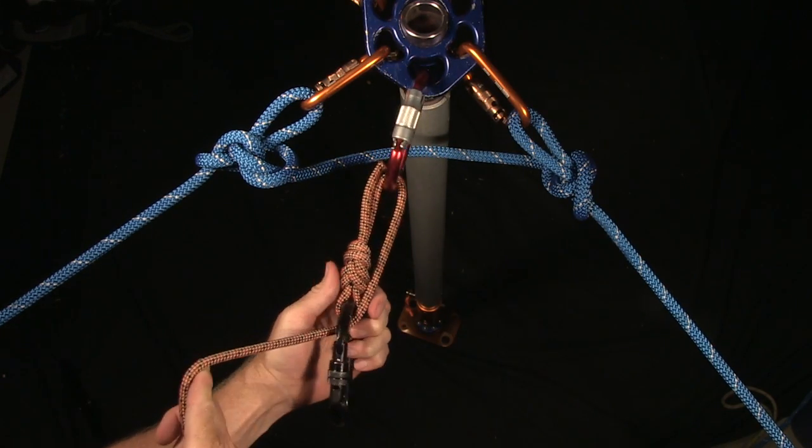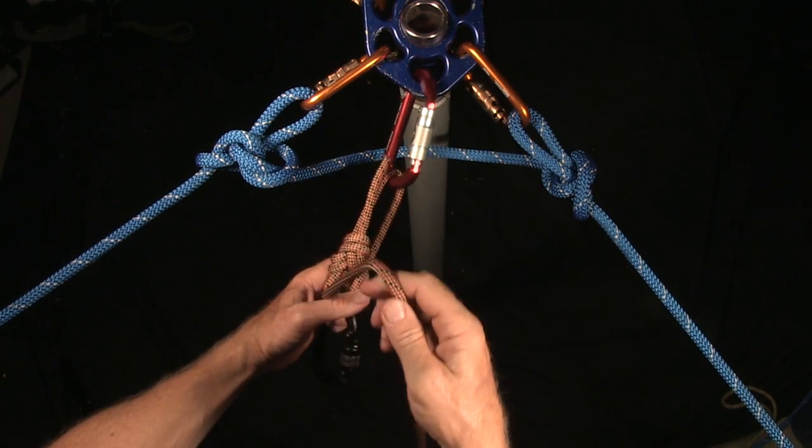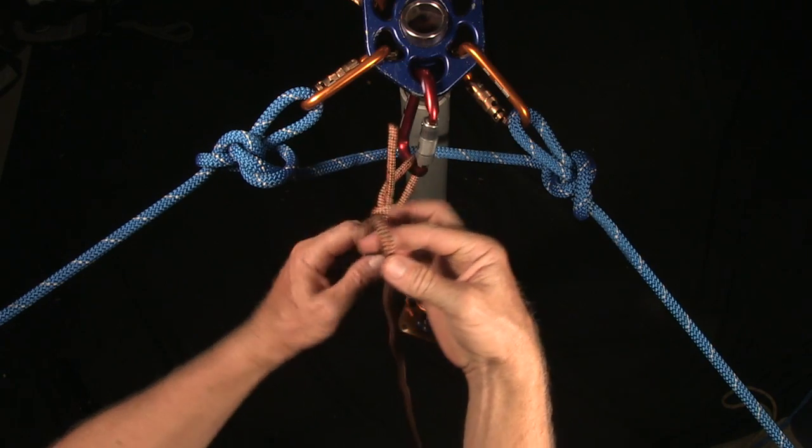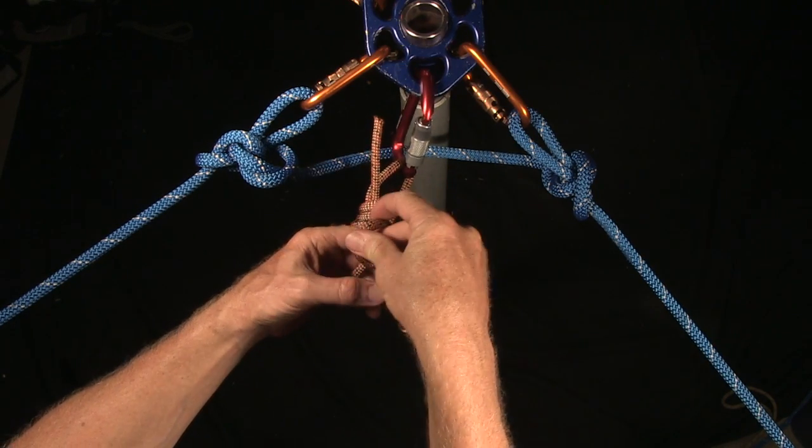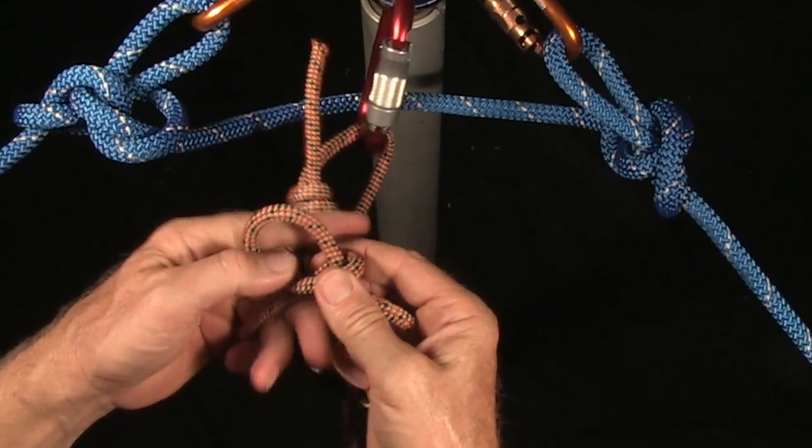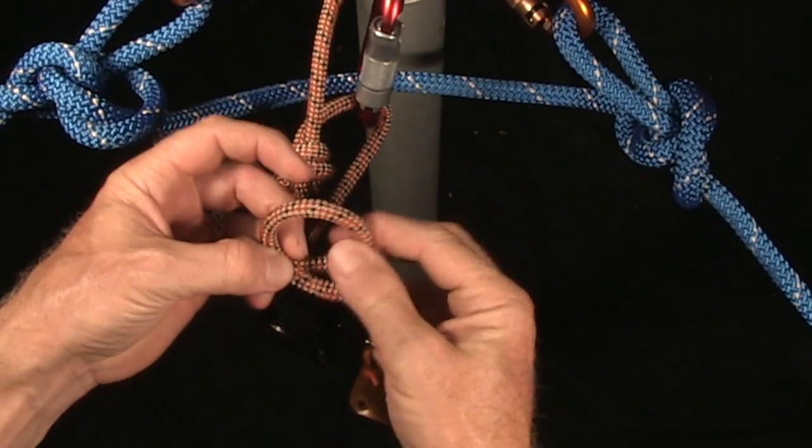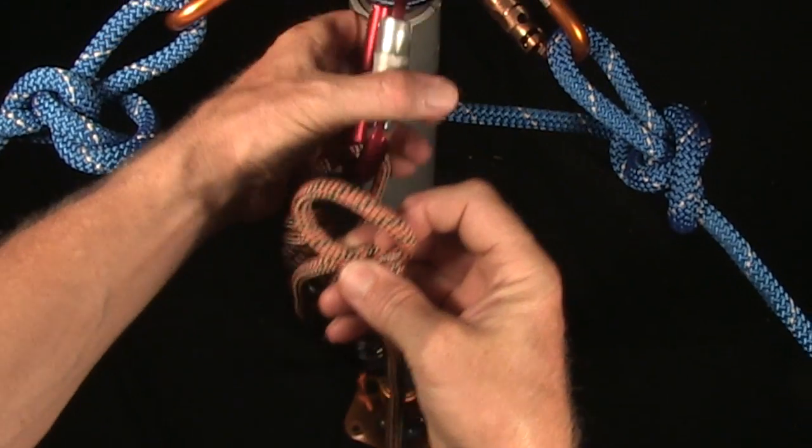So basically I have a 3-to-1 there, and now I'm just going to tie a Munter hitch just like we did before. Munter right here, and I'm going to put that Munter in.